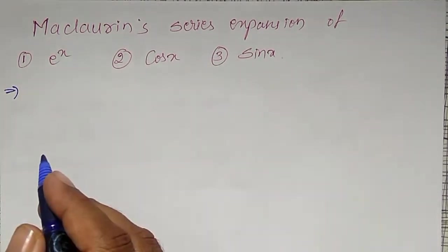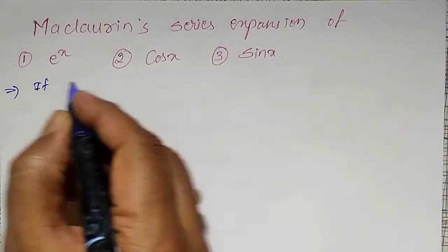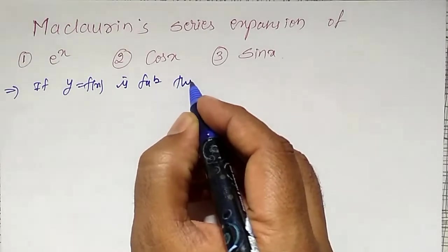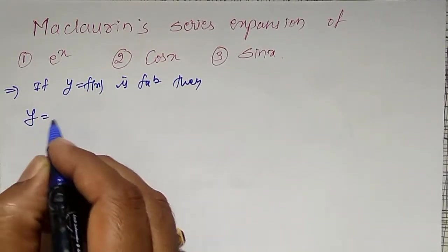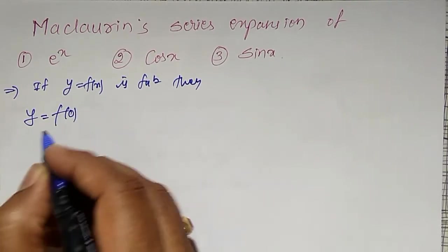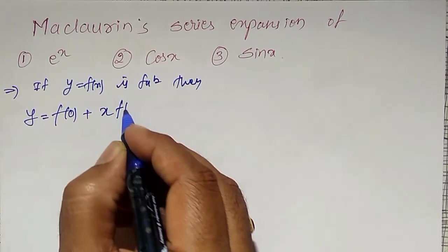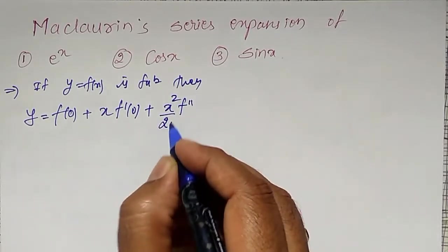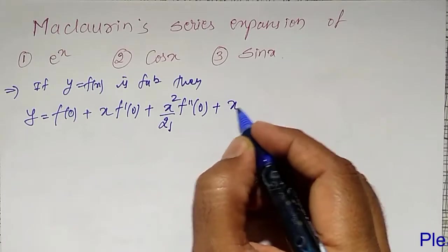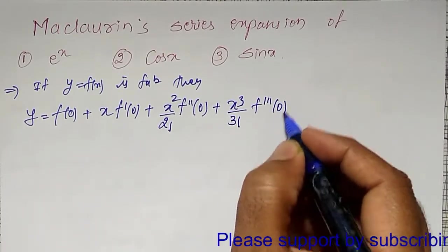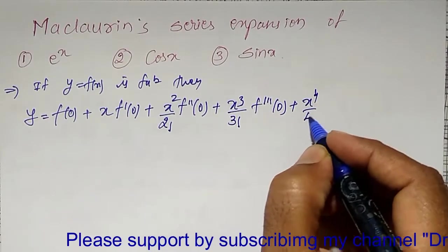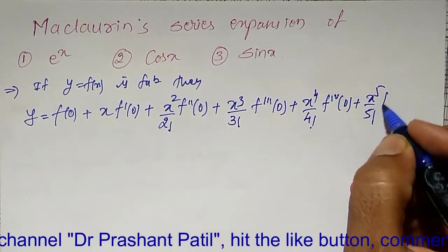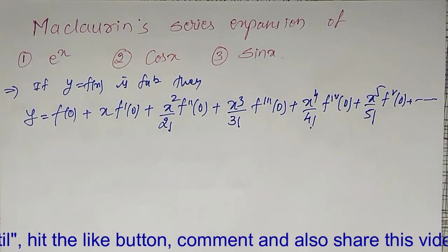Let me first write the Maclaurin series expansion. If y equal to f of x is a function, then Maclaurin series expansion is given by y equal to f(0) plus x into f'(0) plus x squared divided by 2 factorial into f''(0) plus x cube divided by 3 factorial into f'''(0) plus x raise to 4 by 4 factorial into the fourth derivative at 0 plus x raise to 5 by 5 factorial into the fifth derivative at 0, and so on. It continues up to an infinite number of terms.